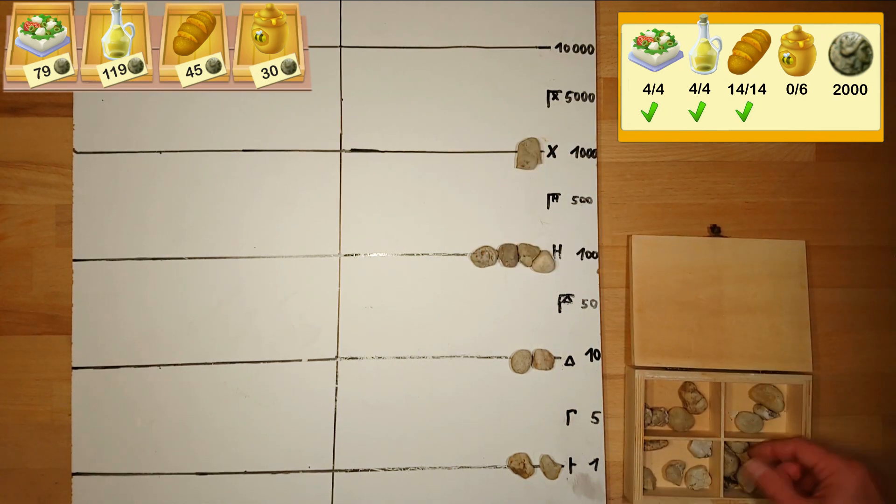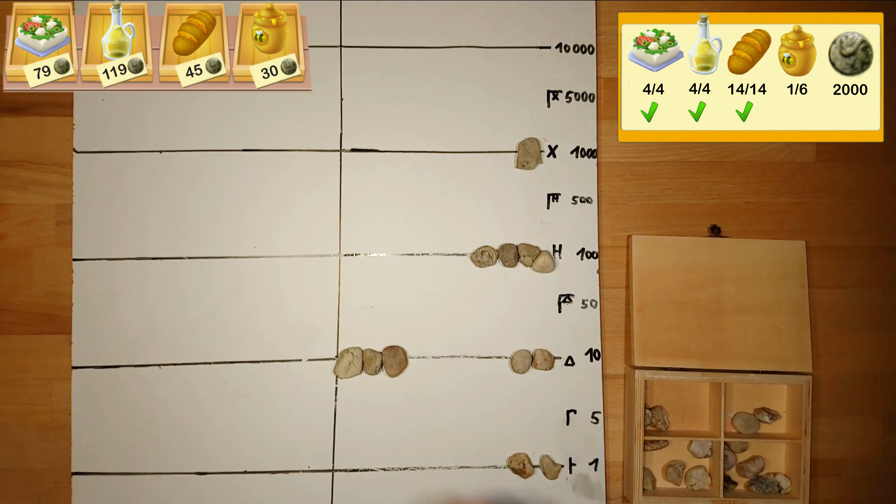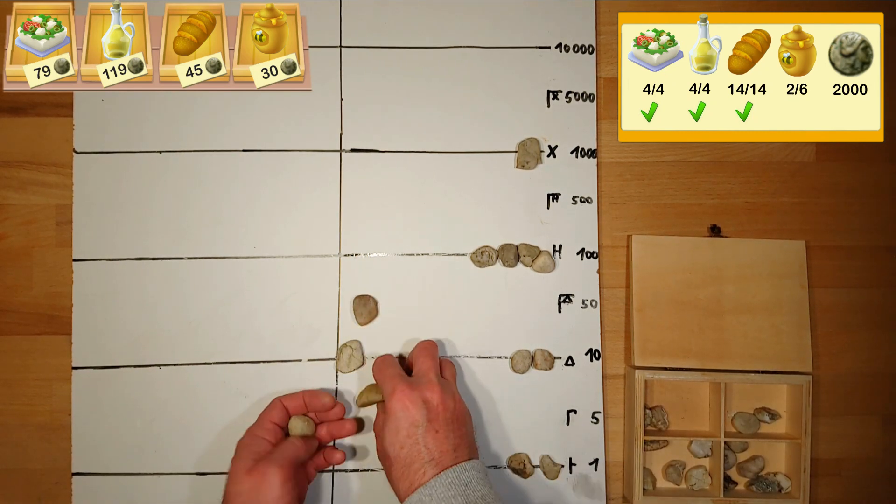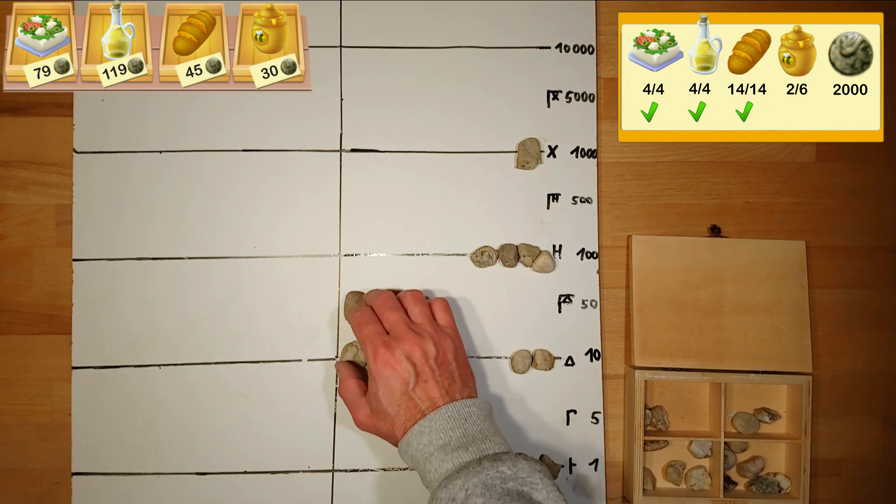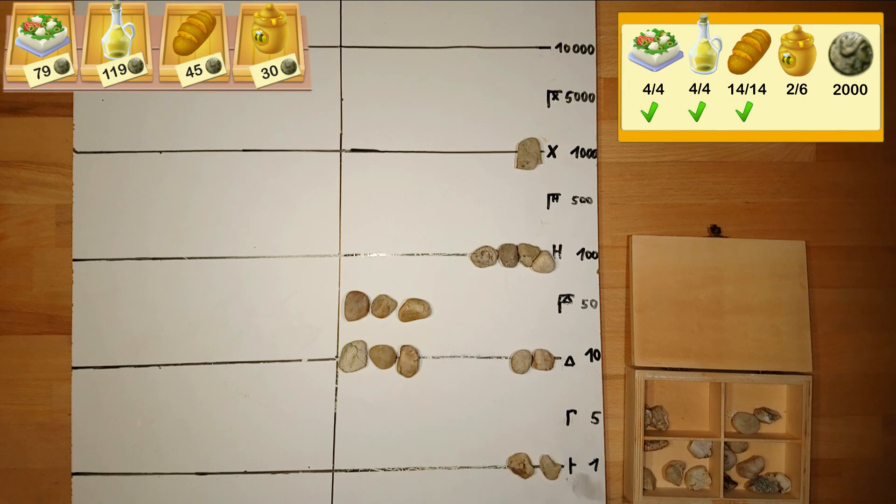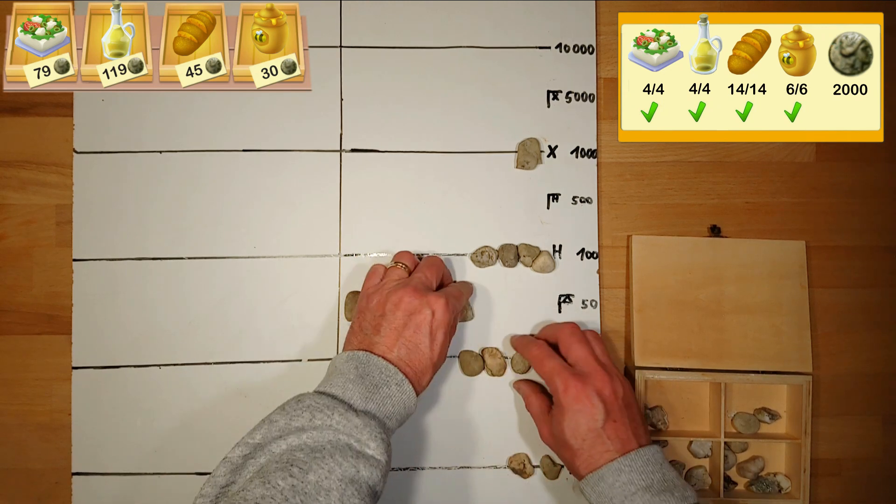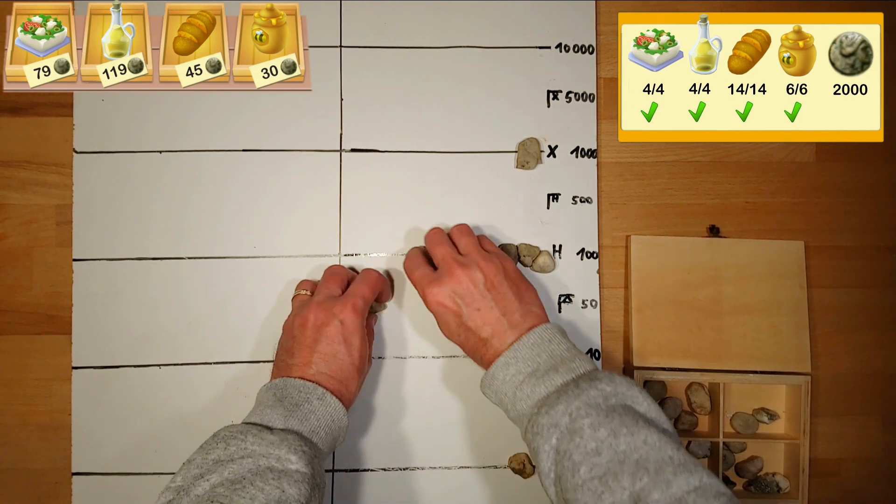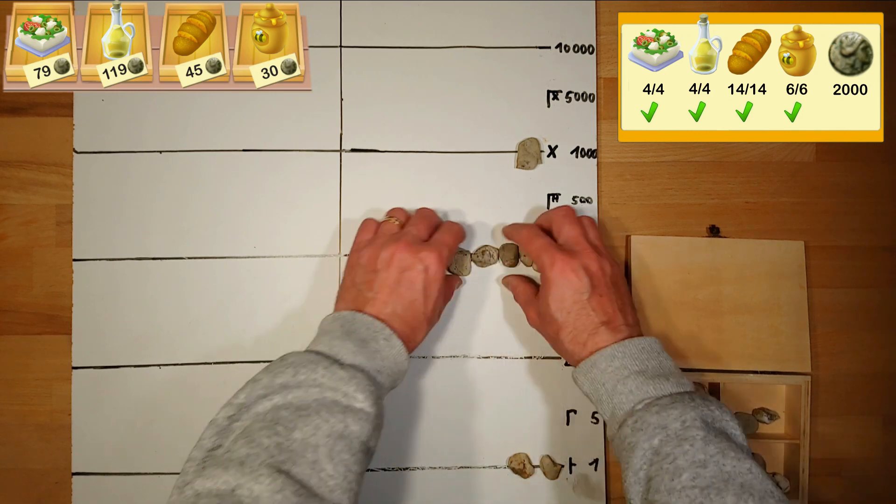One glass of honey costs 30. Two glasses of honey cost 60. We want three times more therefore we multiply the pebbles by three. Now we have the prices of all goods on the table but we have to simplify the numbers to get a final result.